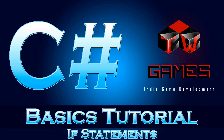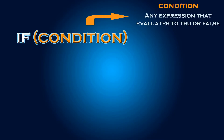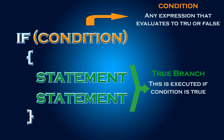Hey and welcome back. Today I prepared a basic tutorial about if statements. Whenever we want to write an if statement, we write the 'if' and after that we add the condition. The condition is an expression that can be evaluated to true or false. After that we open the brackets, write the statement — the code which will be executed if the condition is true — and close the brackets. The statement can be treated like a true branch.